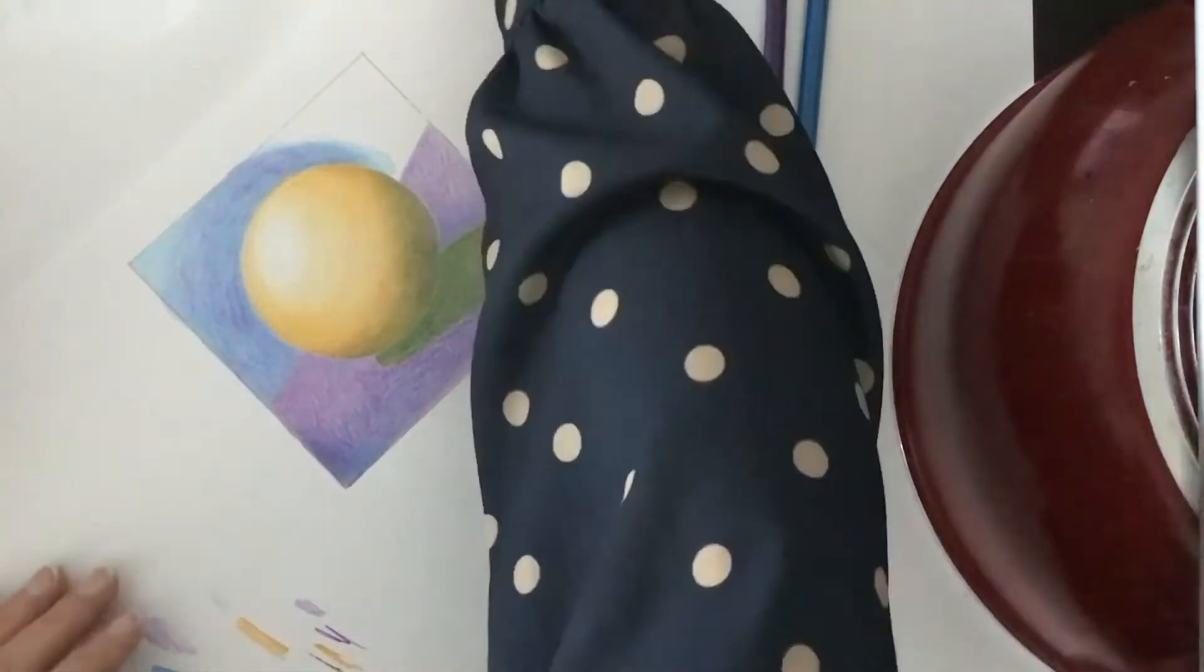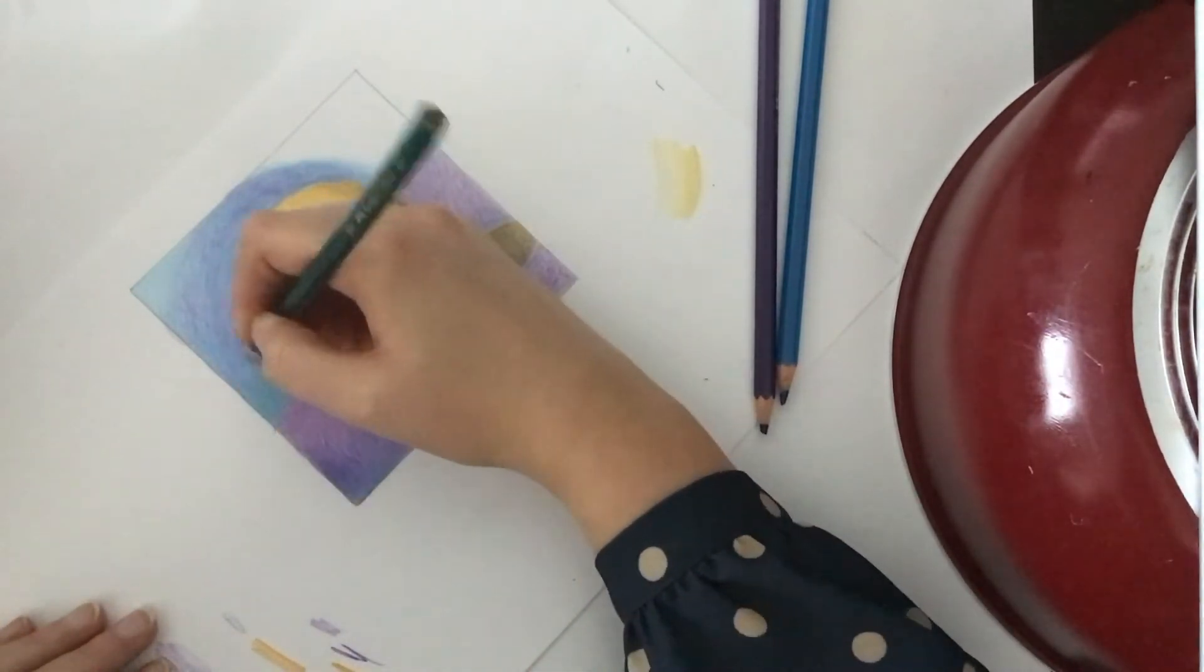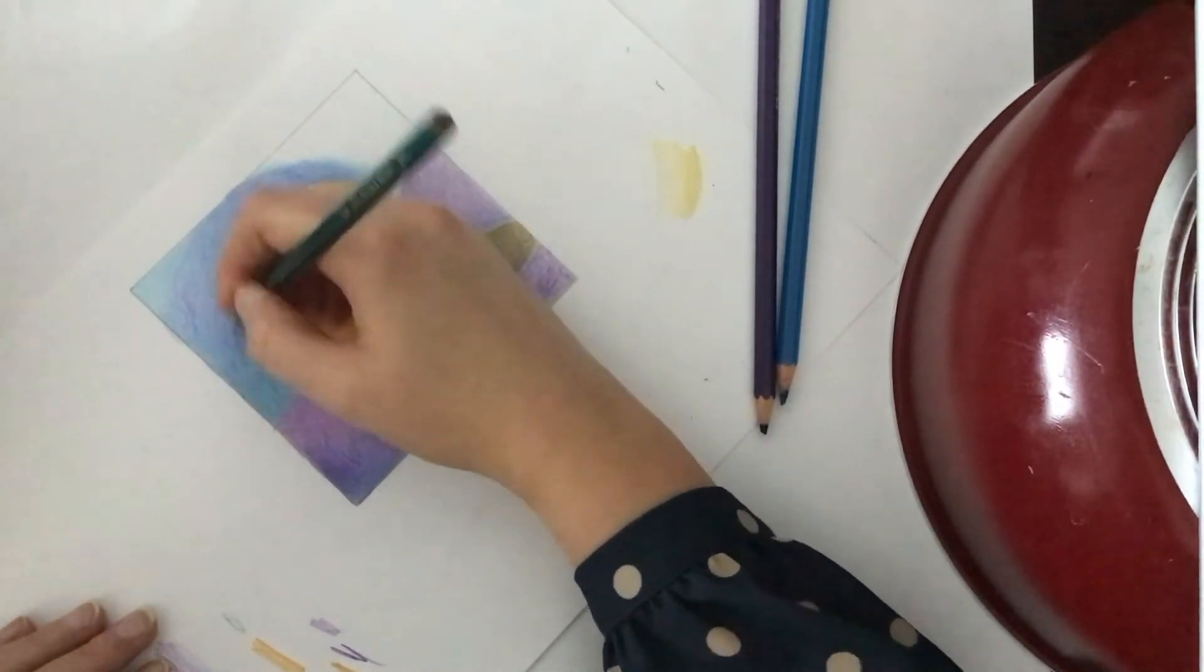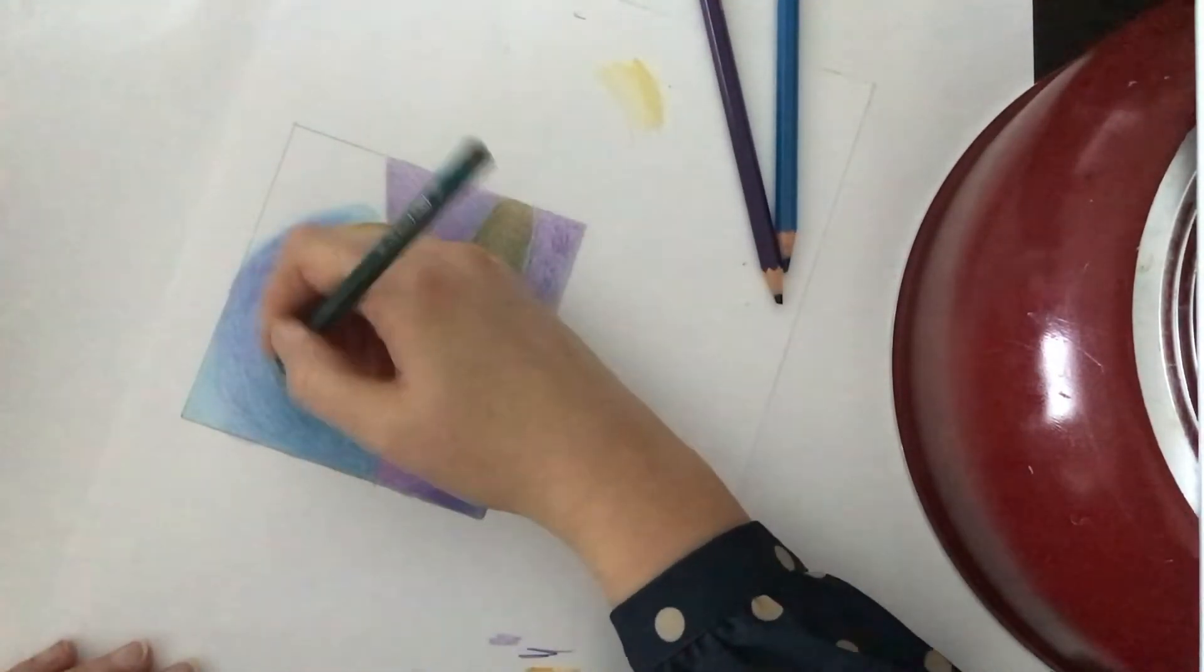Next, I'm going to use this deep green color like the tonal gradient has told me and I'm going to use this to make this blue even darker just in the area that I can see behind the sphere like the reference photo shows me.